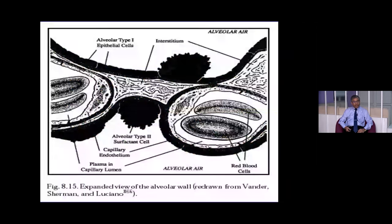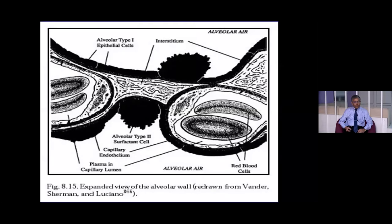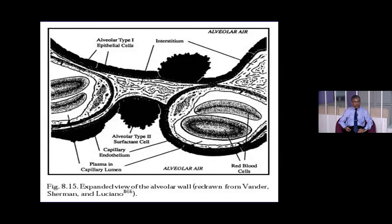Interstitial lung disease affects the interstitium — a very thin layer of tissue lying between the alveoli. This tissue is very important to respiratory function. Diffusion takes place here, where oxygen moves from the alveoli to capillaries and carbon dioxide moves from capillaries to the alveoli. Dysfunction or problems related to the interstitium badly affect the physiological status of the human being.